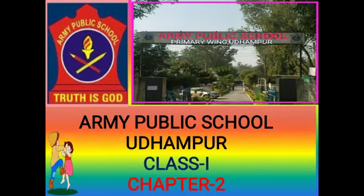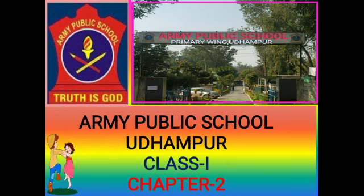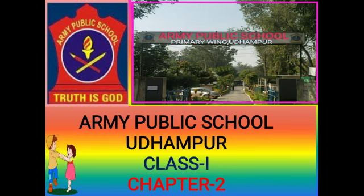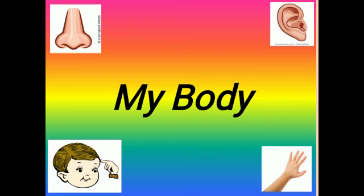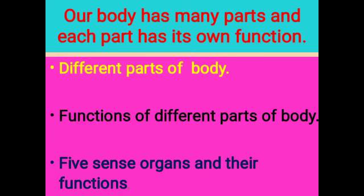Good afternoon, dear children. Army Public School, Prime Breving, Udhampur welcomes Class 1 to the online classes of subject EBS. Today we are going to do chapter number 2 of your EBS book, that is 'My Body'. All of you know that our body has many parts and each part has its own function. In this chapter we are going to understand about different parts of the human body, functions of different parts of the body, five sense organs with their functions, and care of body parts.